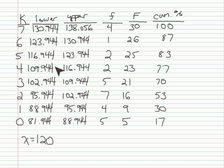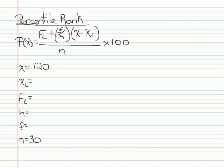It's not here, but here. In the sixth interval, a score of 120 would fall in this interval. And I need the lower limit of that interval, which is 116.944. So x sub l is going to be 116.944.